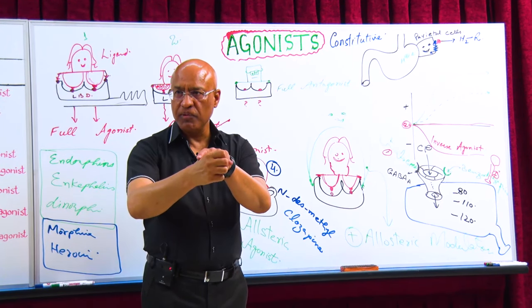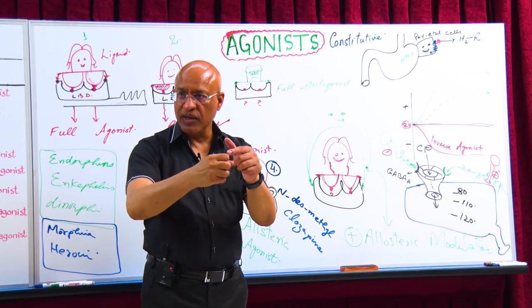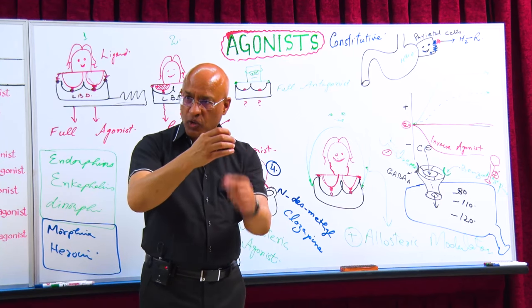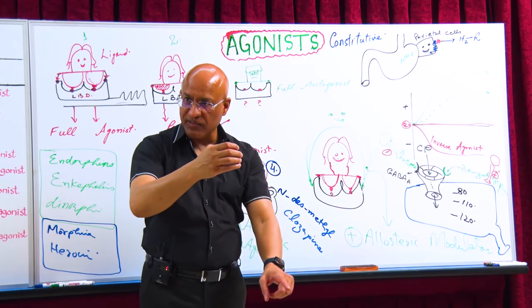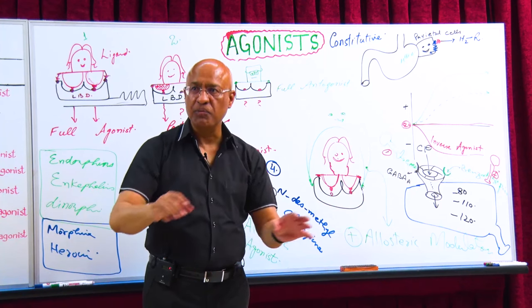But when GABA comes, it becomes a little faster. When benzodiazepines come, the frequency of opening becomes more fast, pumping in and taking in more chloride and making the membrane so negative that stimulatory neurons cannot stimulate it, and we become calm and quiet.